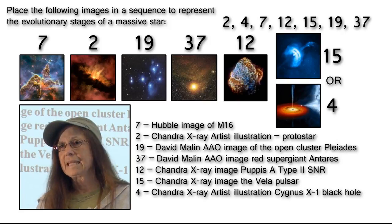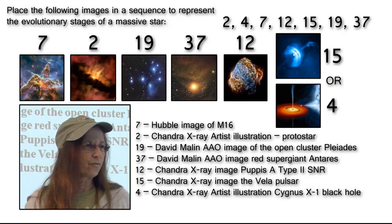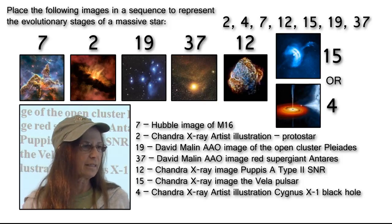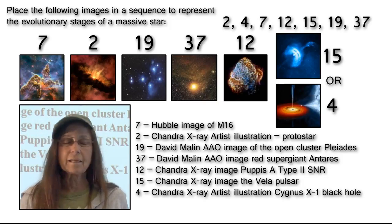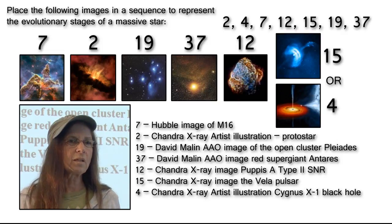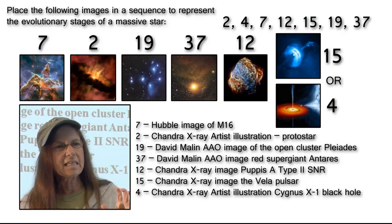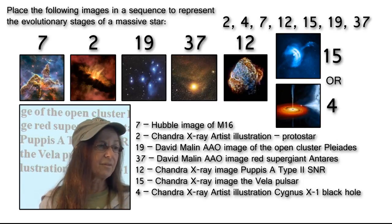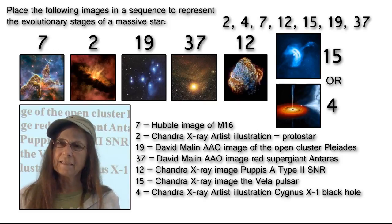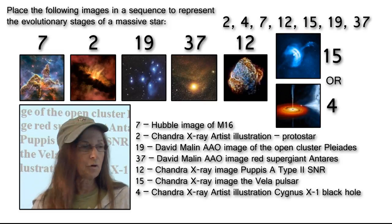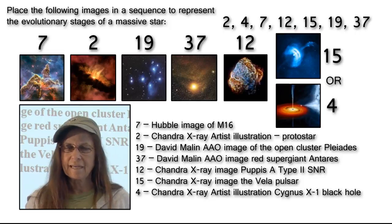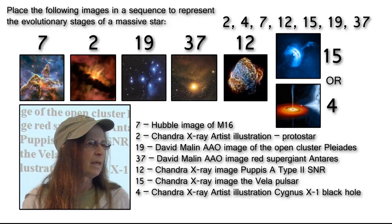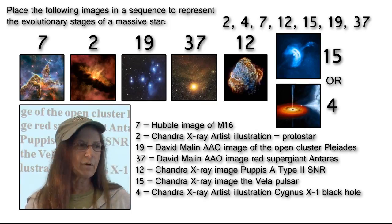What we have here is, again, starting with 19, we have David Malin, who used to be with the Anglo-Australian Telescope in Australia. That is the Pleiades. The Pleiades is an open cluster of bright, young, hot stars. They are massive, young stars. Then, the next one is also a David Malin astrophotograph. That is Antares. Antares is in the constellation of Scorpio. It happens to be a red supergiant.